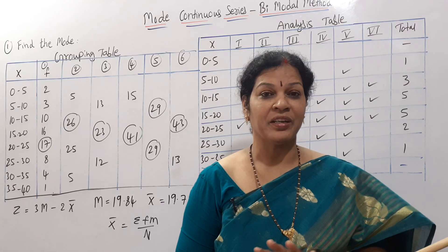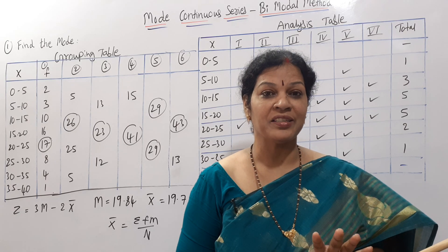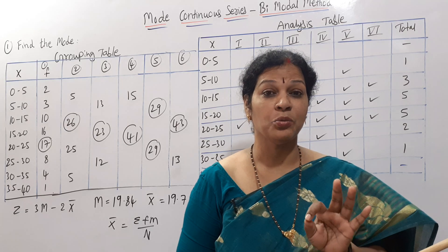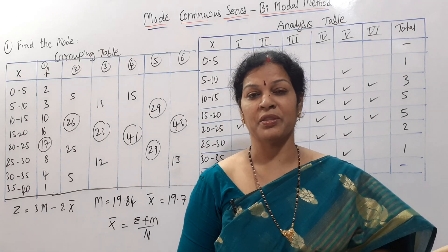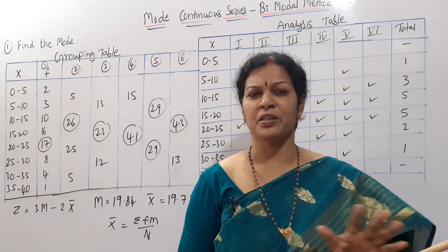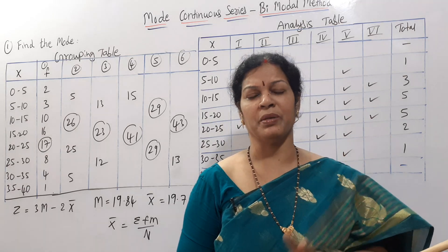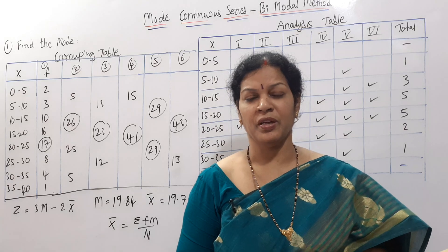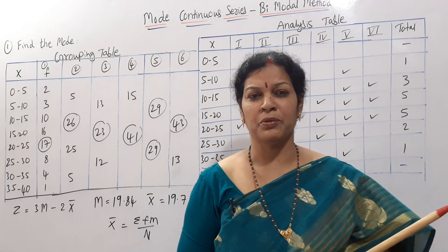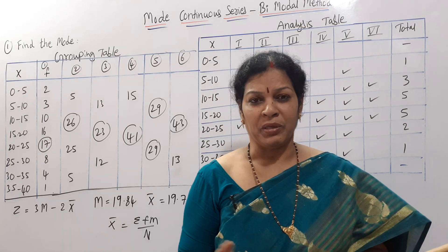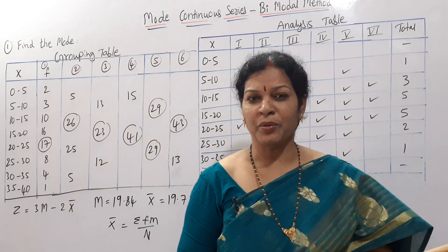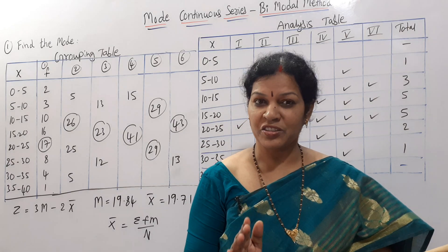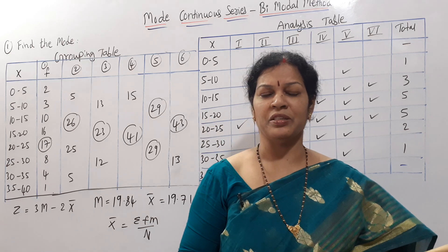When we are unable to find out the class interval through the grouping analysis table, that is the bimodal method. If you cannot determine the mode, we will find it as a bimodal method. For the bimodal method, we will use our second formula. The mode is equal to 3 median minus 2 mean.